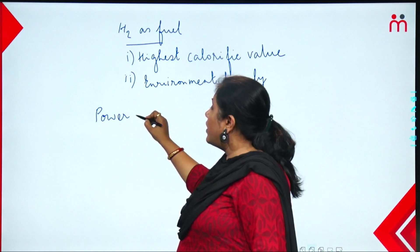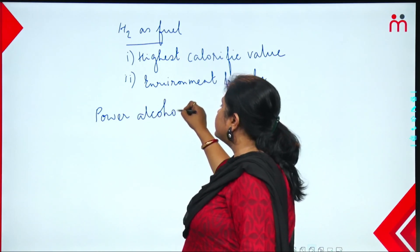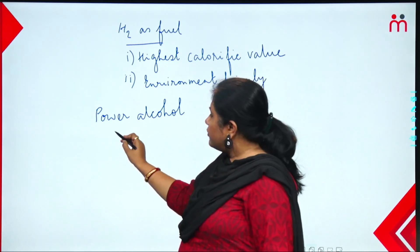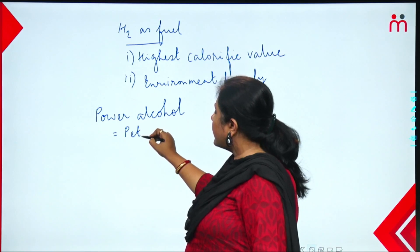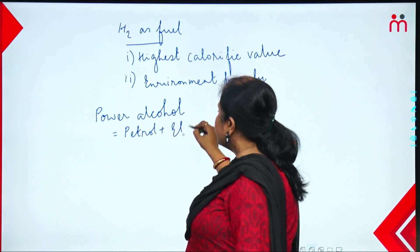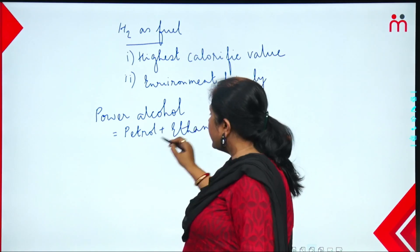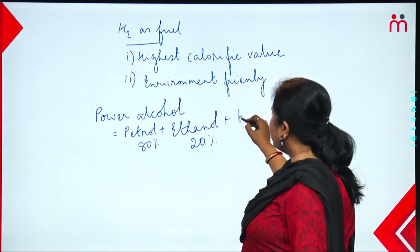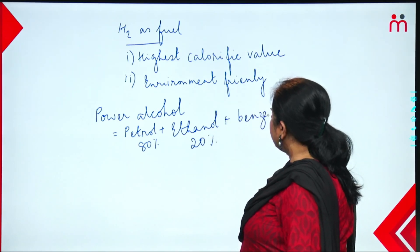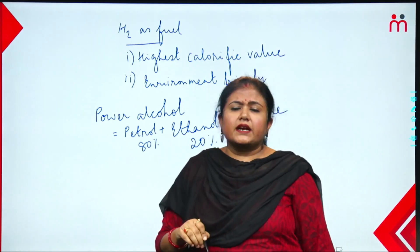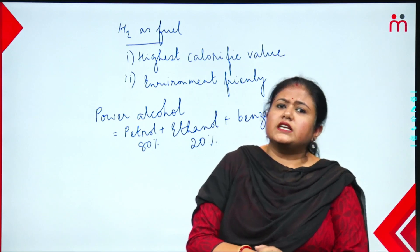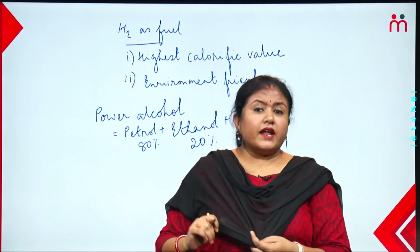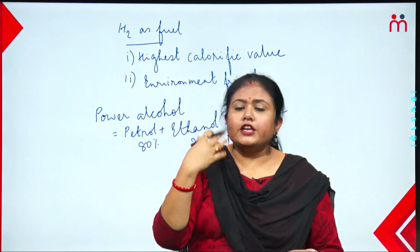Similarly, power alcohol is also being considered as an alternative fuel for vehicles. Power alcohol is a mixture of petrol and ethanol — 80% petrol mixed with 20% ethanol, and a negligible amount of benzene is also added to the mixture. This entire mixture is used as vehicle fuel and is called power alcohol.